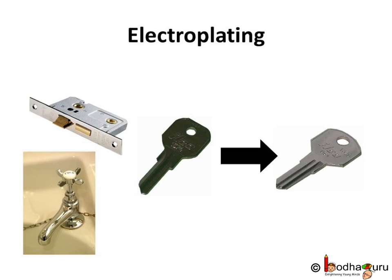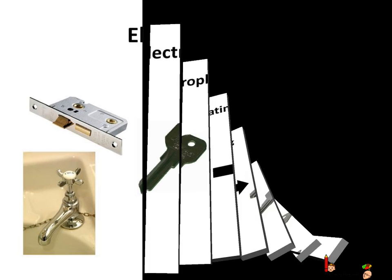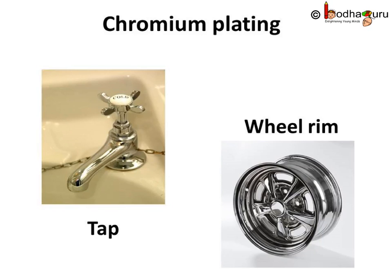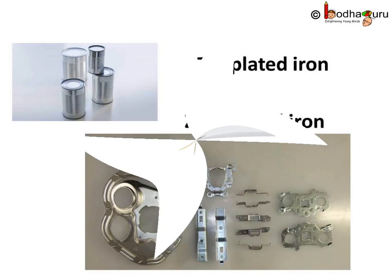We can electroplate iron with zinc, tin, or nickel to make iron objects more durable. Chromium plating is done on many objects such as car parts, bath taps, kitchen gas burners, bicycle handlebars, wheel rims and many others, because chromium has a shiny appearance and it does not corrode. Also, it resists scratches. But chromium is expensive and it may not be economical to make the whole object out of chromium, so we make the object from a cheaper metal and only deposit a coating of chromium over it.